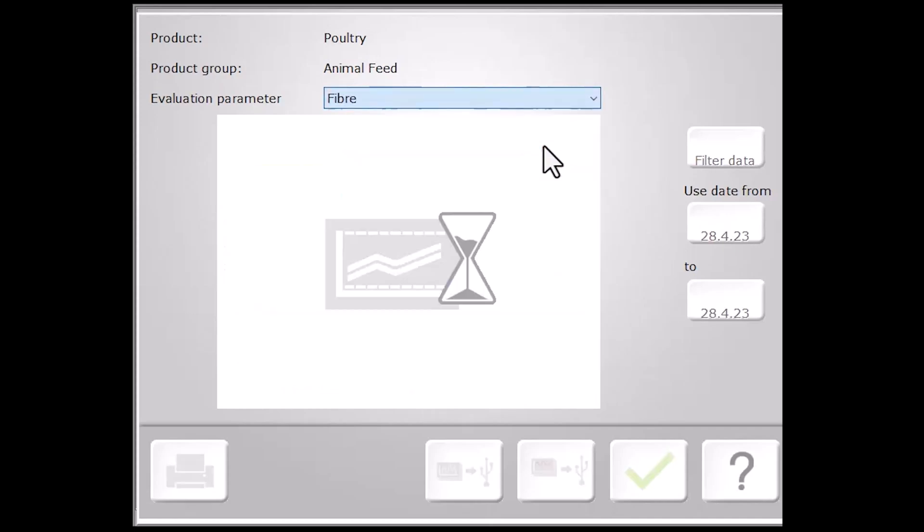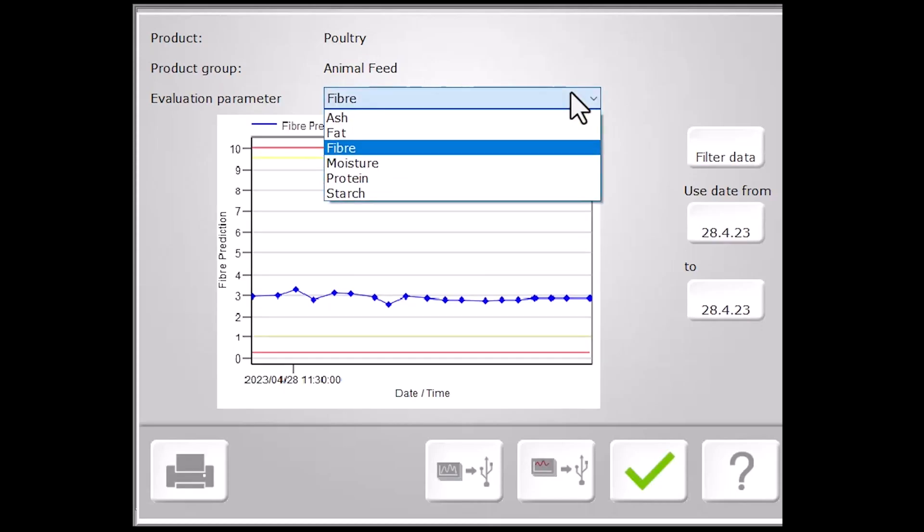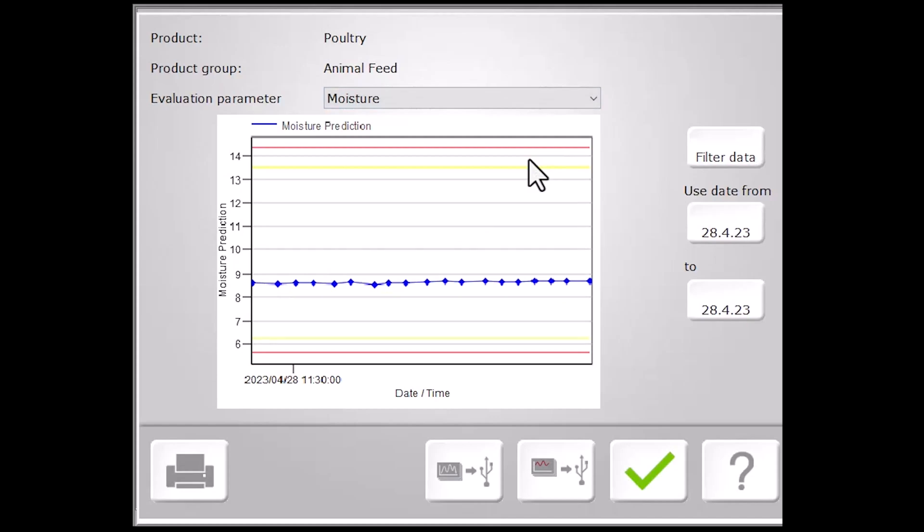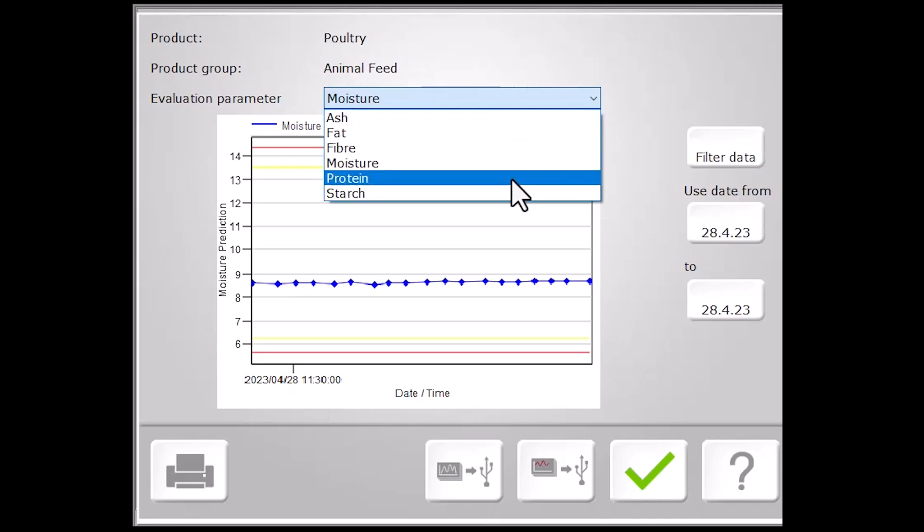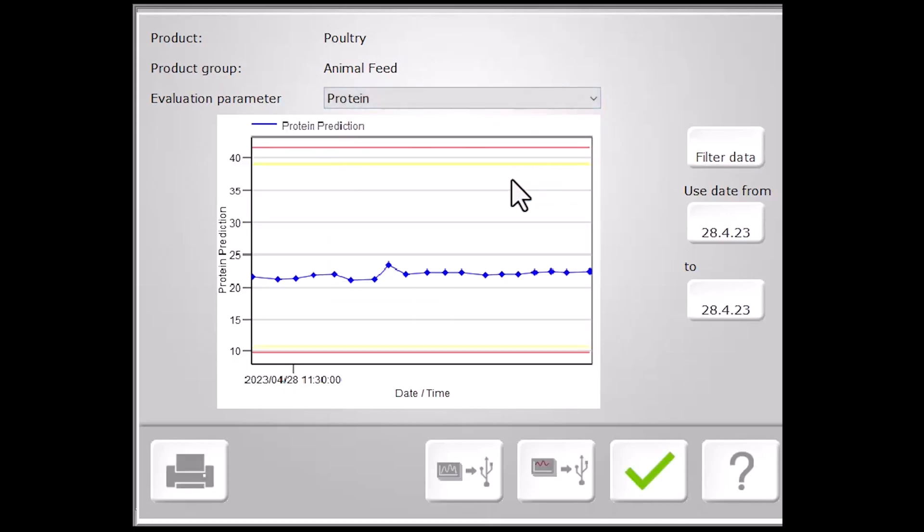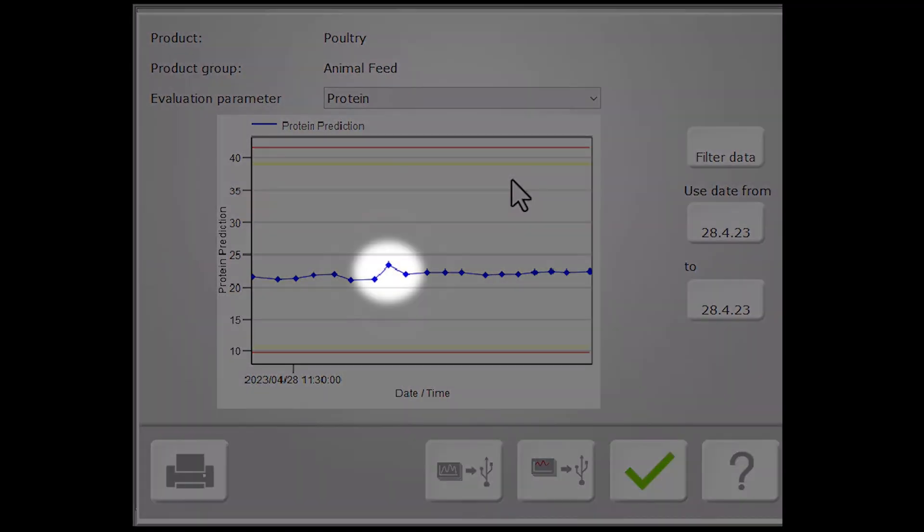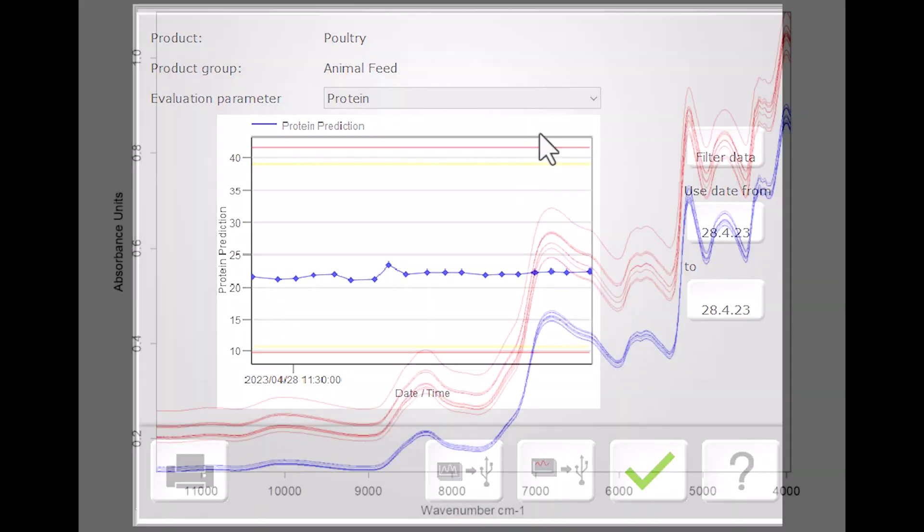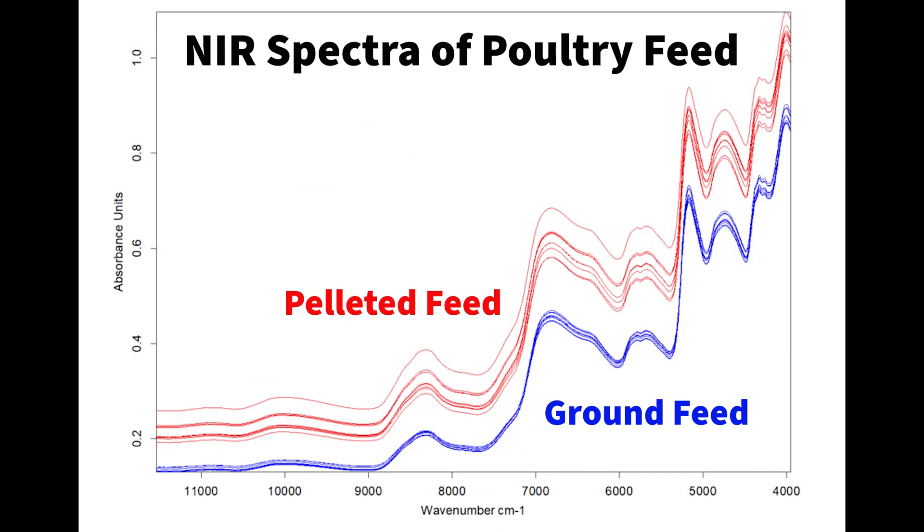We can also note how the repeatability is impacted differently from constituent to constituent, where parameters such as moisture may not be as greatly impacted. For protein, however, the difference that grinding makes is visually substantial. Here, we see about a two to three percent difference between two replicates of the same sample. And as our earlier experiments with corn indicate, grinding can improve the accuracy and precision of protein predictions by four and four and a half times respectively.